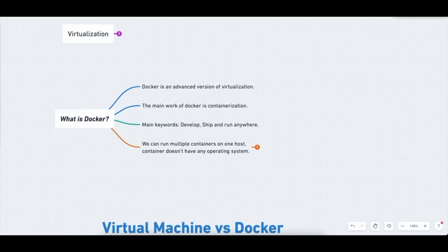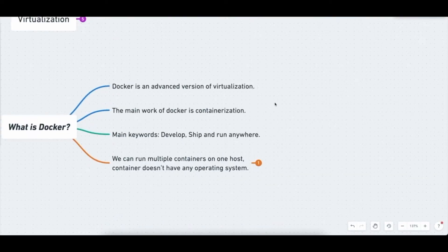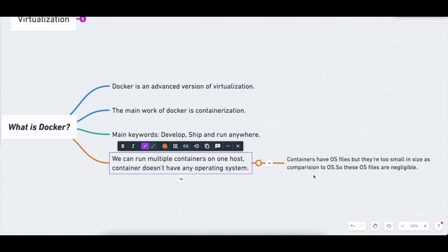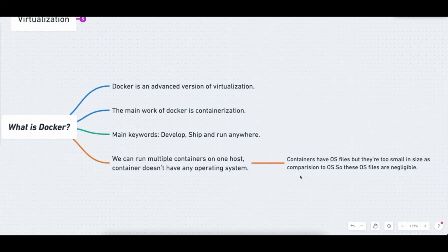Let's look at the definitions of Docker. Docker is an advanced version of virtualization. Its main work is containerization, and the main keywords are: develop, ship, and run anywhere. We can run multiple containers on one host. A common question is: do containers have an operating system? Containers do have some OS files, but they are very small compared to a full operating system — essentially negligible.